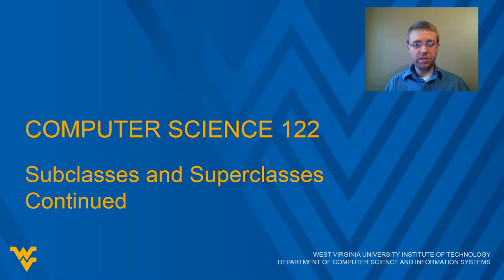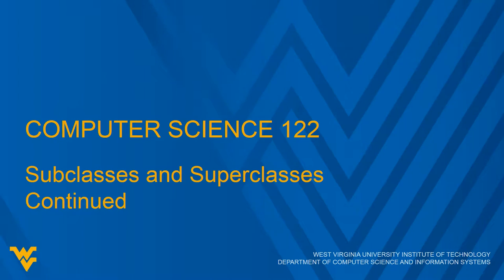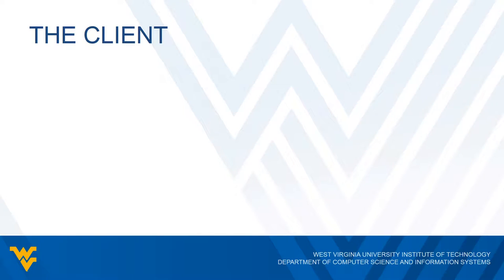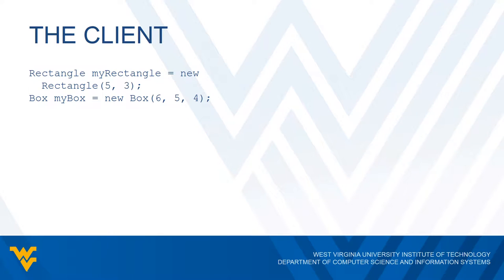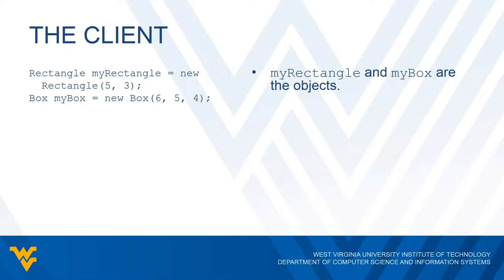In this lecture, we will continue our discussion on subclasses and superclasses. Let's go back to our box and rectangle examples and see what happens in the client. So let's say we have the following lines of code. Here we have two objects which we call my rectangle and my box. My rectangle is an object of the rectangle class and my box is an object of the box class.